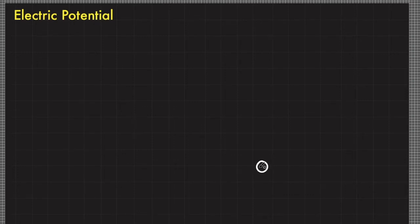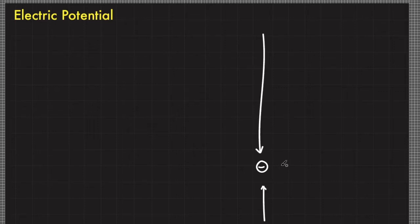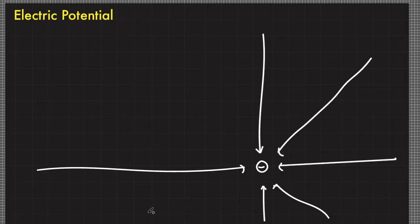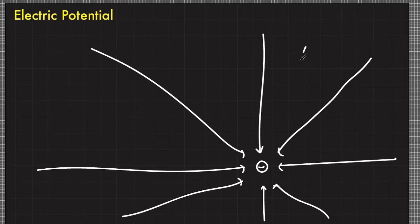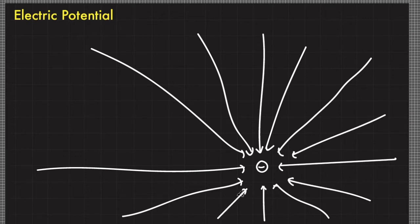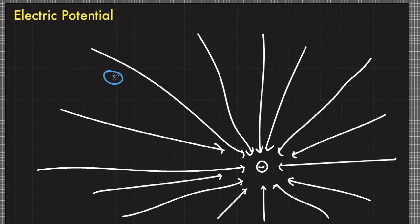Today, we will be exploring electric potential. Consider this negative charge. This negative charge produces an electric field in its vicinity. If we position a positive charge in this region, we know that the positive charge gets attracted to this negative charge.